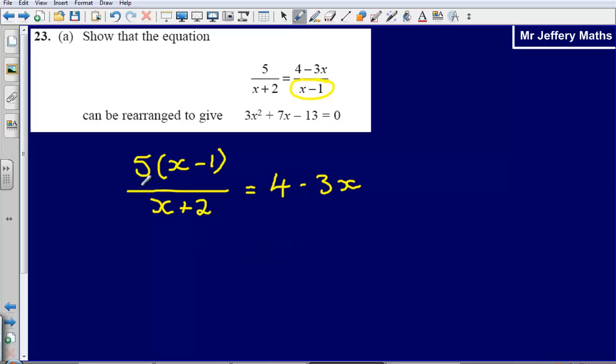Now I'm going to do exactly the same with this fraction here. I've got divide by x plus 2, so times both sides by x plus 2 to cancel that out. That's going to give me 5 bracket x minus 1 is equal to 4 minus 3x multiplied by x plus 2.